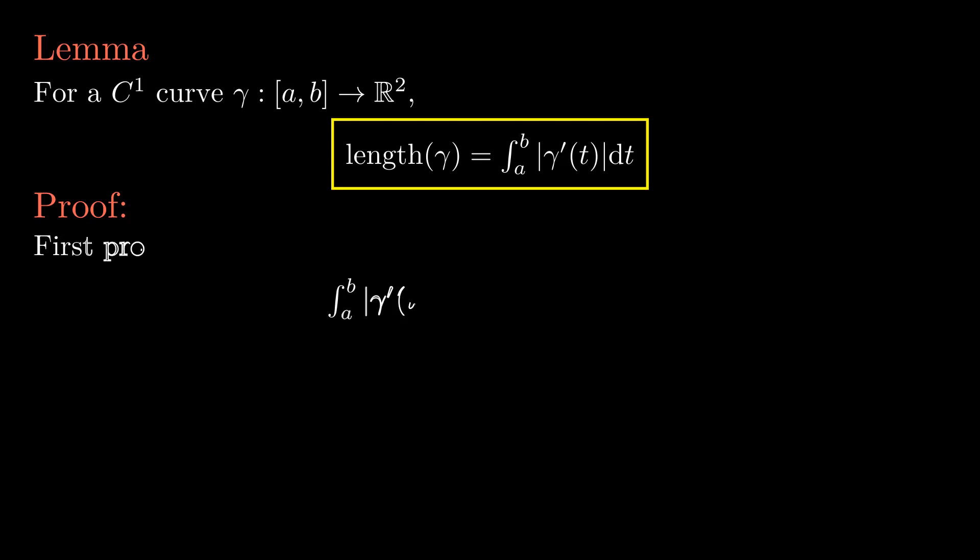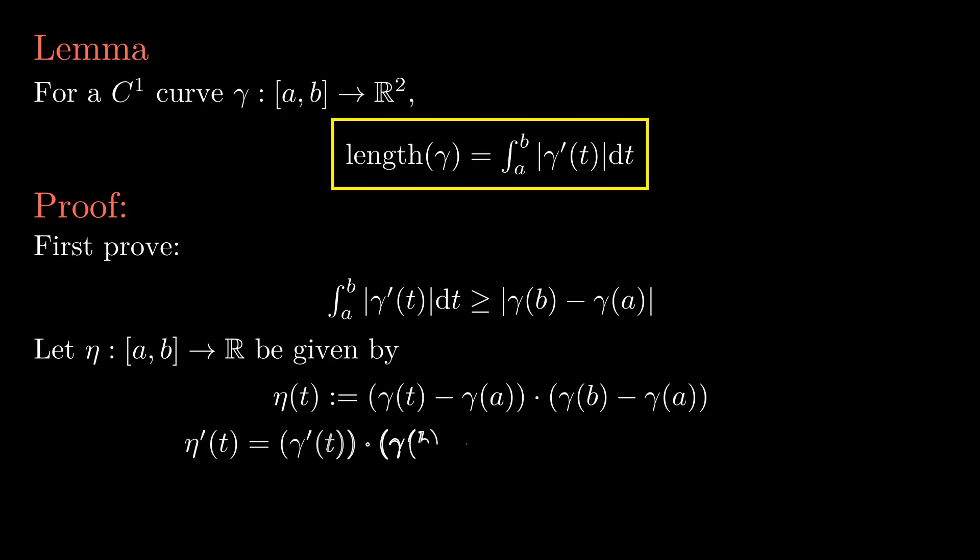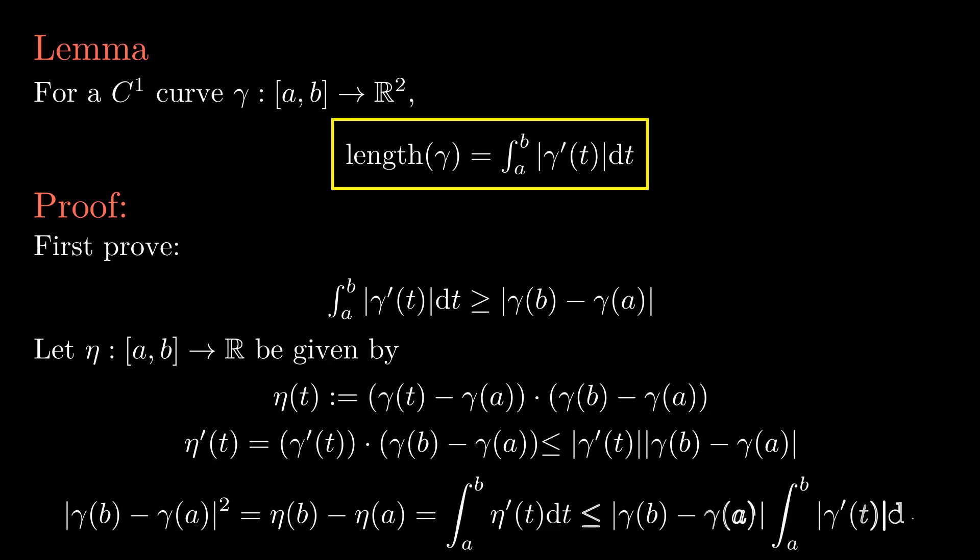Now let's jump right into the proof. The first step will be to show that the right-hand side is always at least as large as the distance between the endpoints of the curve. To do that, one must first consider the scalar function eta given by gamma of t minus gamma of a dot gamma of b minus gamma of a. This may seem like a weird choice at first, but after we take its derivative and apply the Cauchy-Schwarz inequality, one obtains the desired equation by integrating. So again, what happens? We take derivative, then Cauchy-Schwarz, then we integrate.